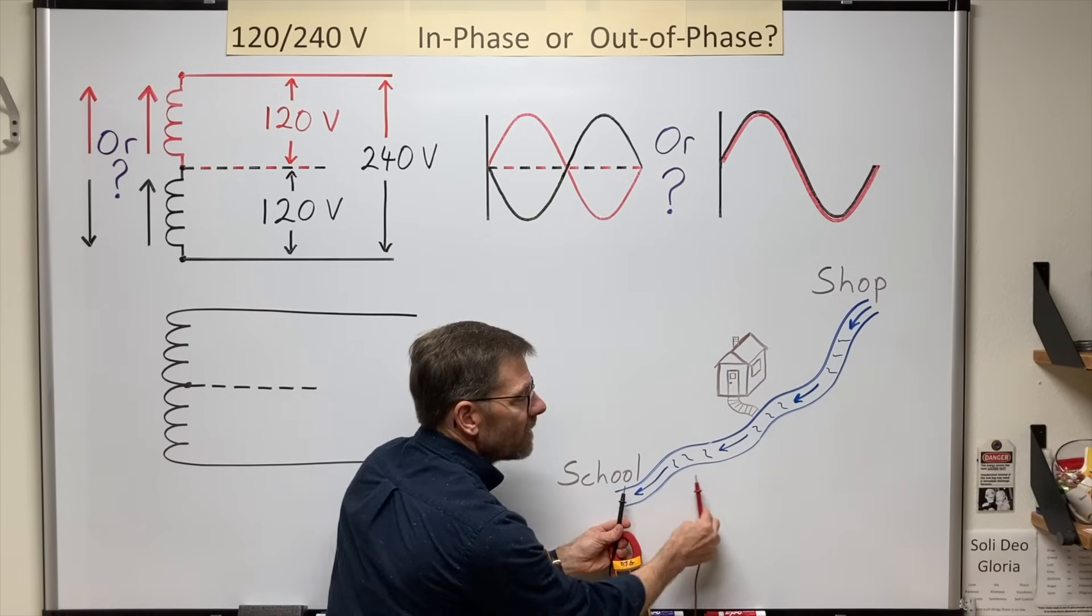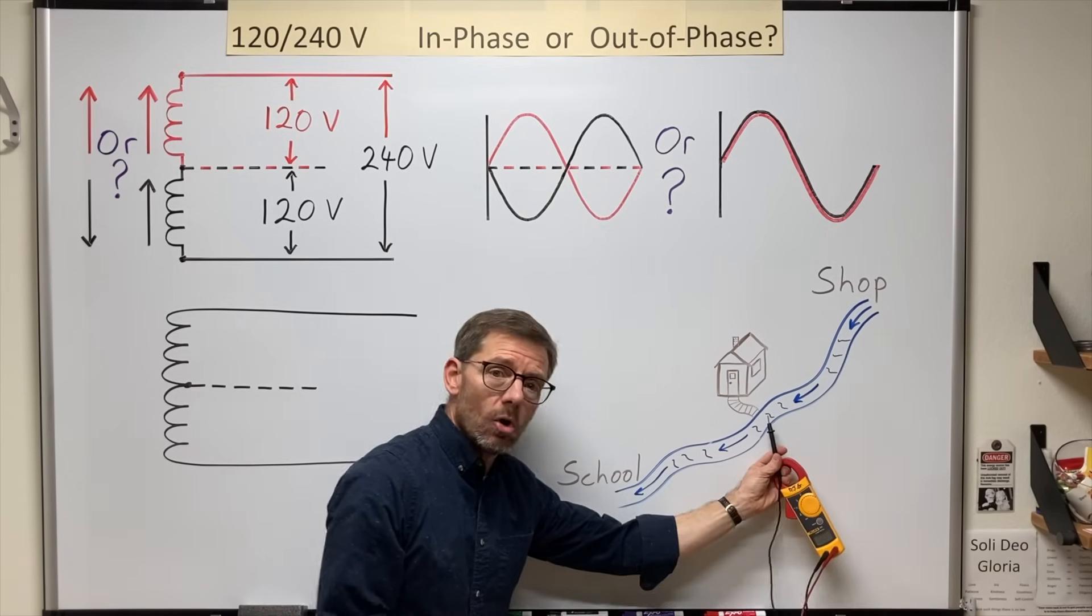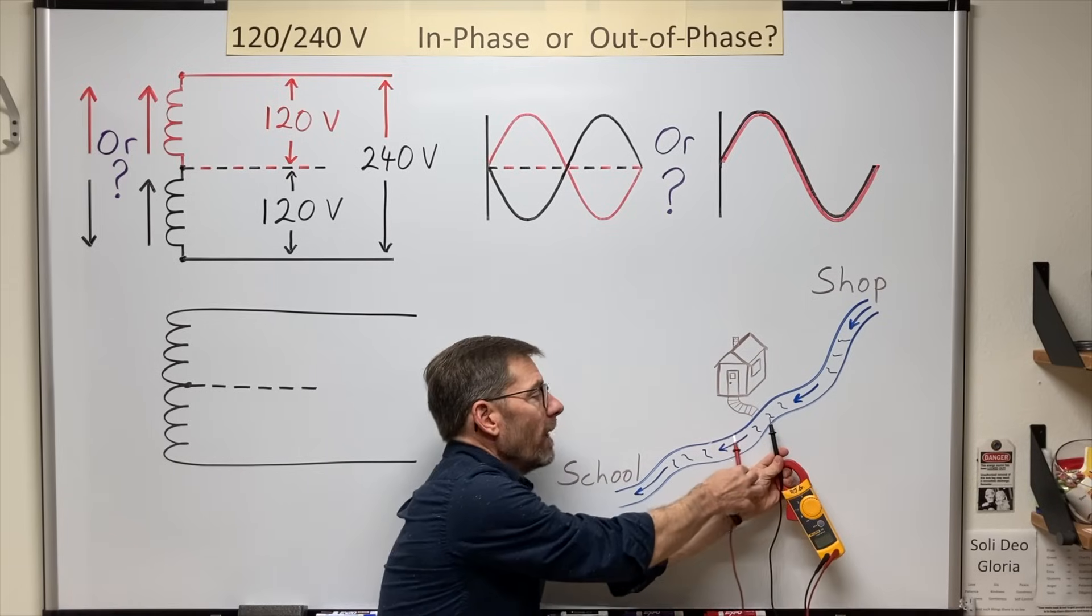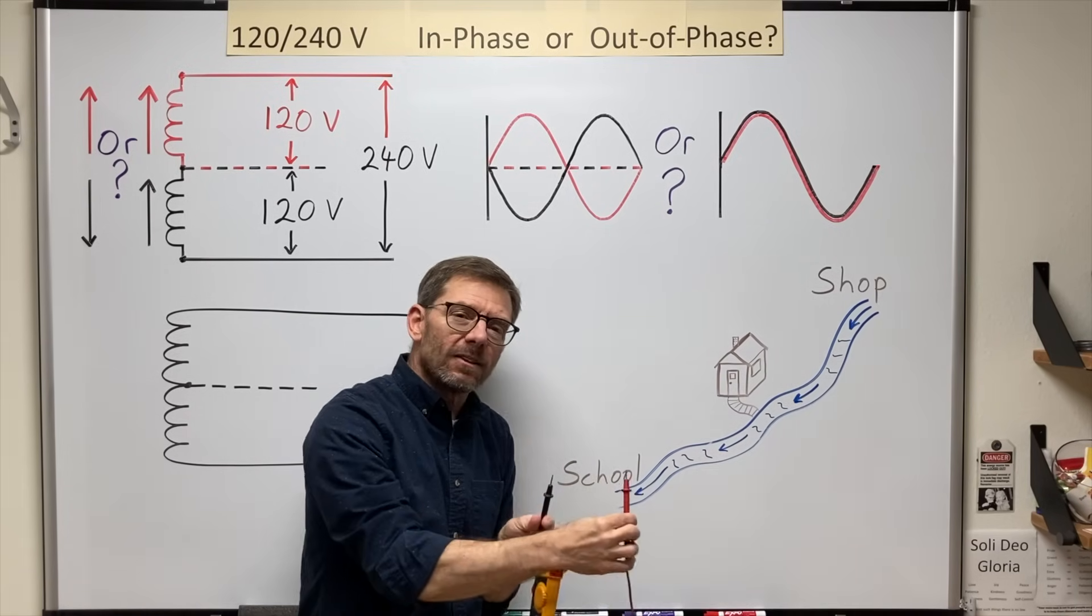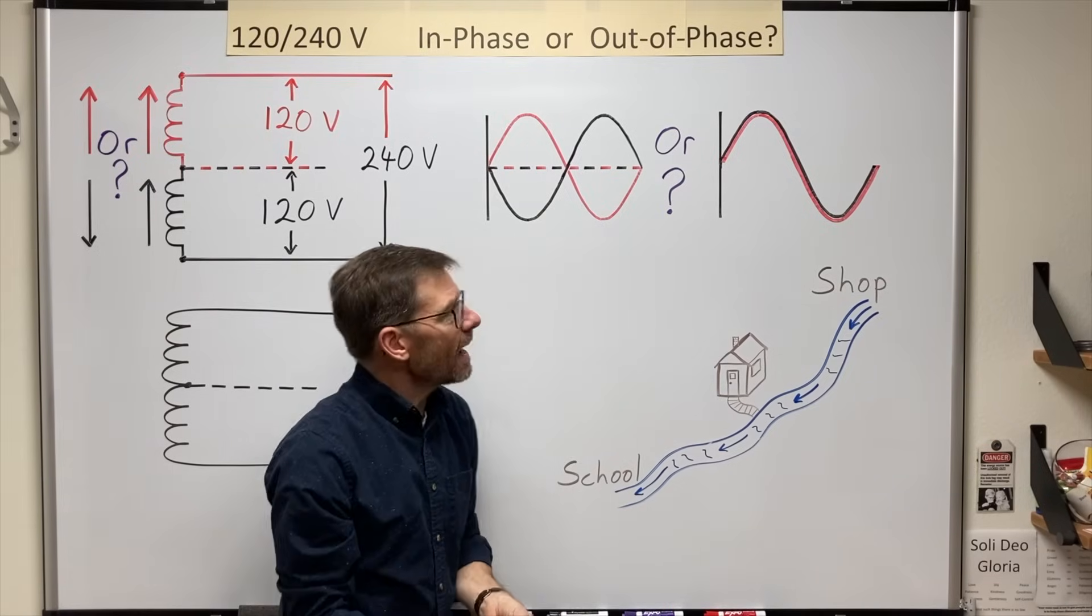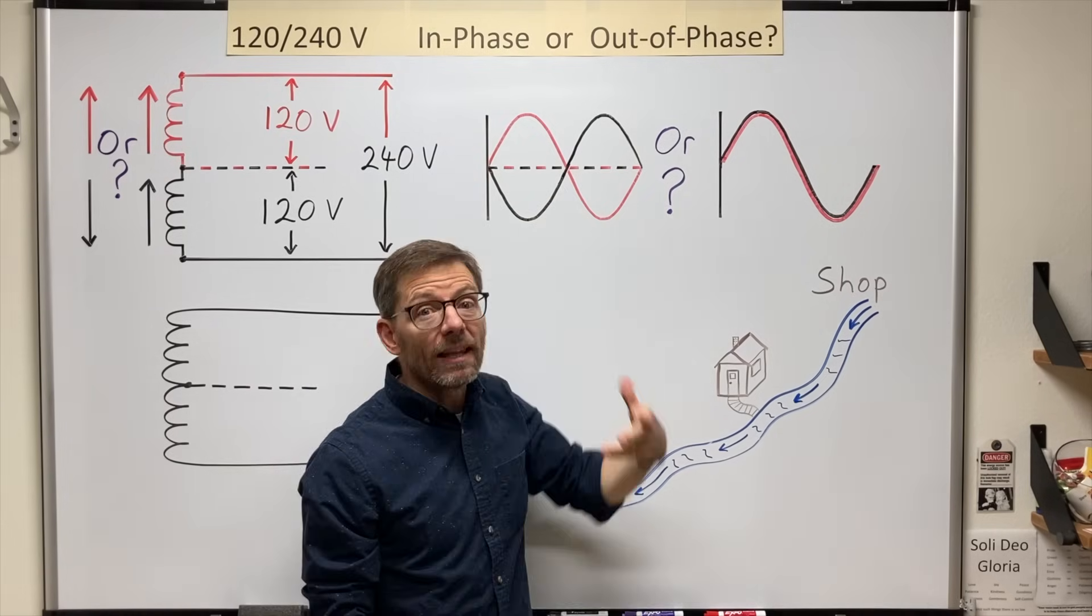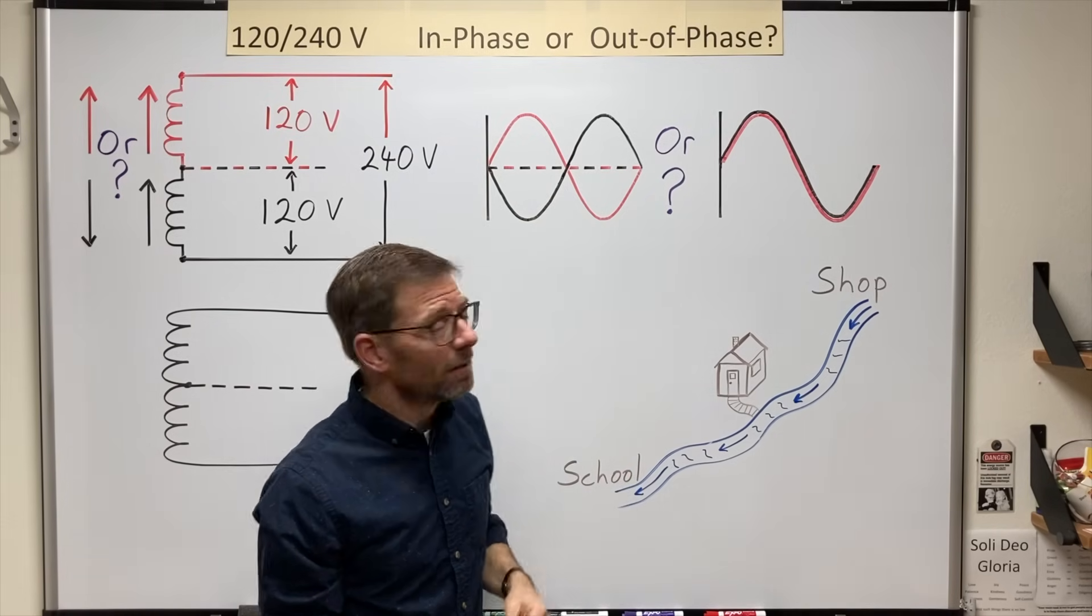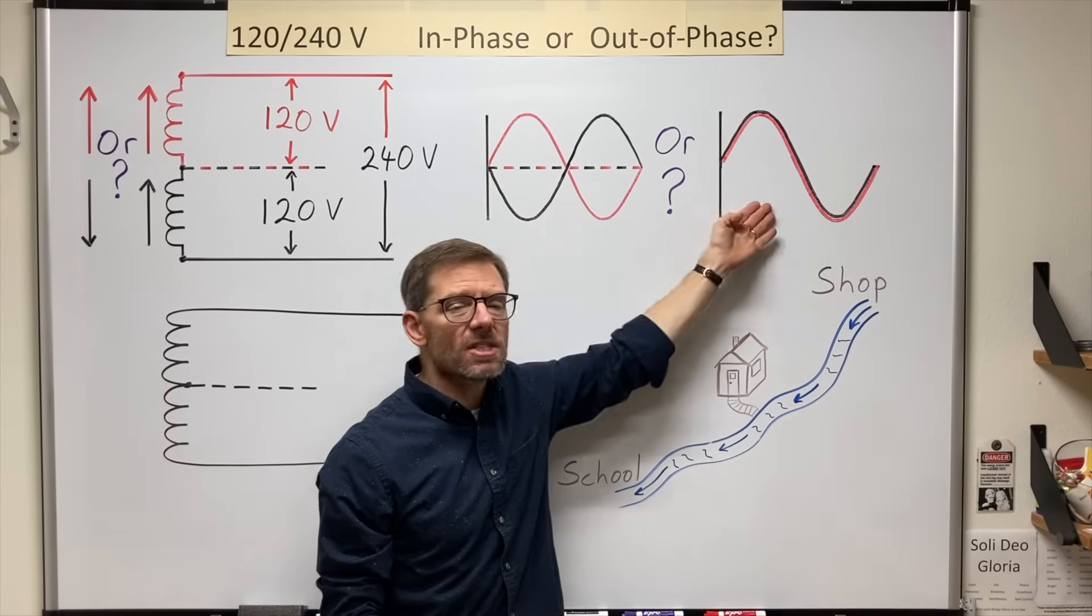If my reference or my starting point is school, then I'm going against the current on this section. But if my reference is home, I go with the current on this section. We'll find that the orientation of the leads may have something to do with one sine wave being flipped relative to the other one.